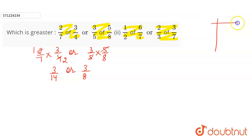So let's take the LCM of 14 and 8. The factors of 14 and 8: 2 into 7 is 14 and 2 into 4 is 8. Again, 2 into 2 is 4, 2 into 1 is 2. Then 7 into 1 is 7. So the LCM will be equal to 2 into 2, 4, 4 into 2, 8, 8 into 7 is 56. So the LCM of 14 and 8 is 56.